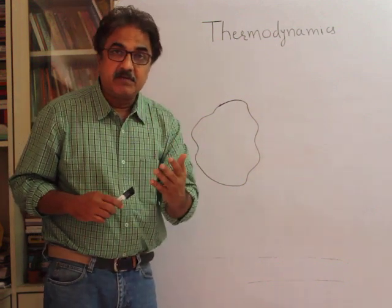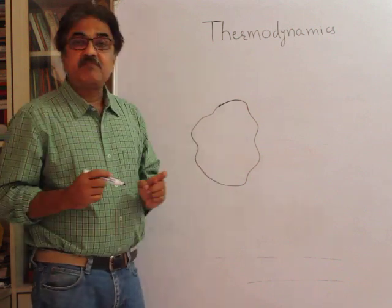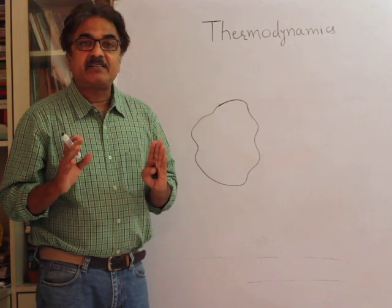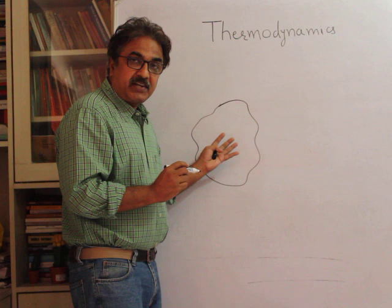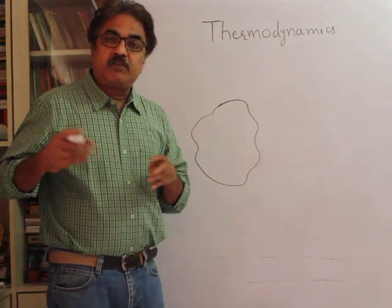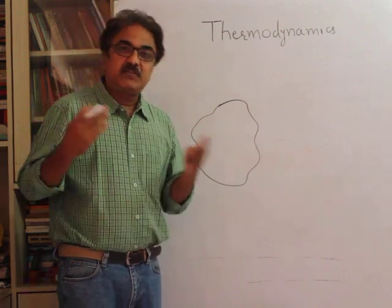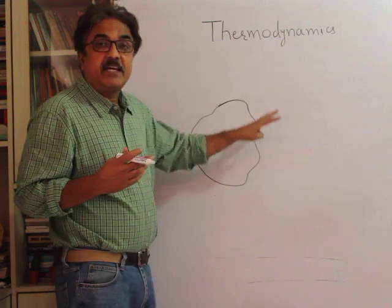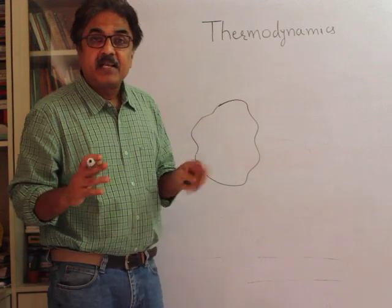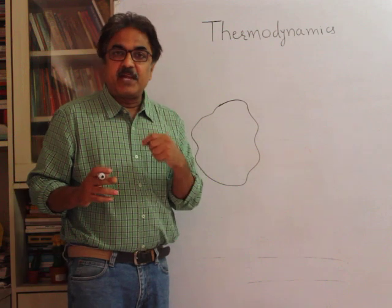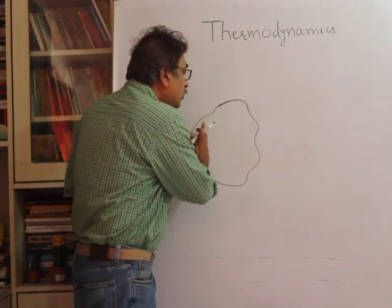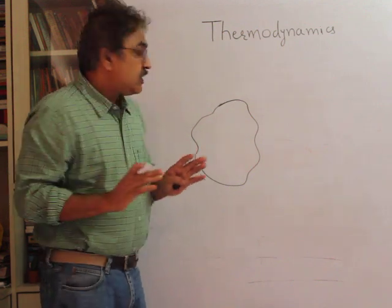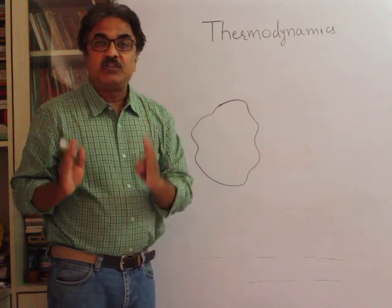For the system to be under equilibrium, three conditions have to be satisfied. First, there should be no chemical reaction taking place — that is chemical equilibrium. If there is a chemical reaction within the system, properties will change — it could be exothermic or endothermic, so temperatures could increase or fall, densities could change. Also associated with chemical equilibrium is that there should be no diffusion of mass anywhere within the system.